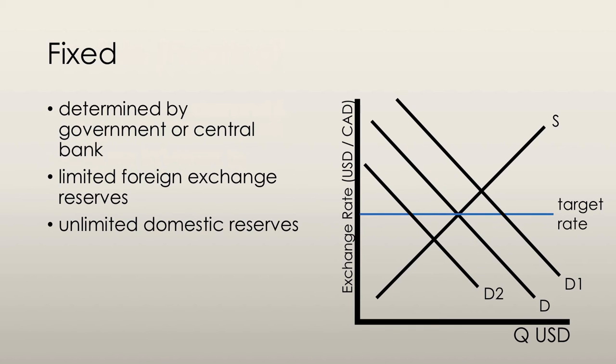A fixed exchange rate is determined by the decision of either the government or the central bank, and it's achieved by the central bank intervening to block unregulated forces of demand and supply.